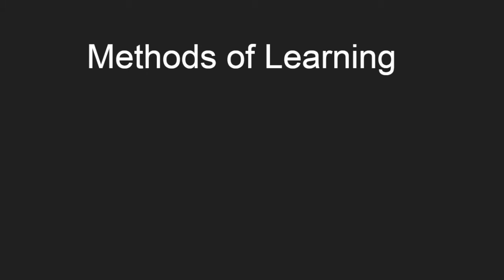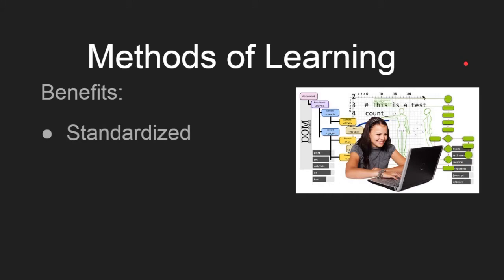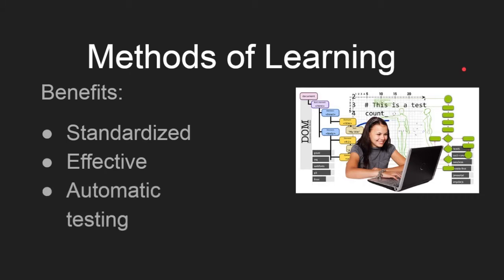The main method a lot of people use is computer-based training, where an employee sits down, logs into their computer, clicks a link, and goes through several modules with automated quizzes. The benefits are that it's standardized — everybody has the same module and method of learning. Standardization makes it more effective, automated quizzes can instantly test knowledge, and completion is automatically tracked through the hosting application.